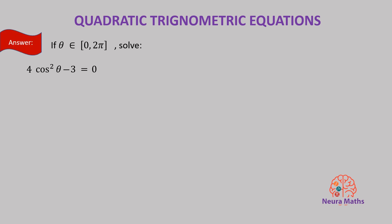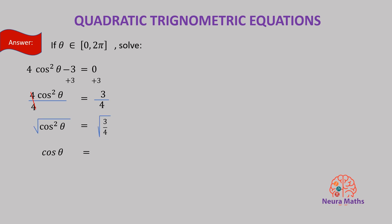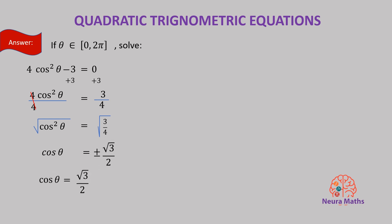Adding 3 to both sides gives us this. And dividing both sides by 4 gives us that. And taking the square root of both sides gives us positive and negative root 3 over 2. So cosine theta could be equal to positive root 3 over 2 or negative root 3 over 2.